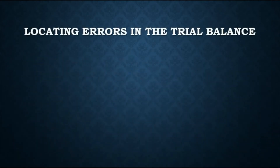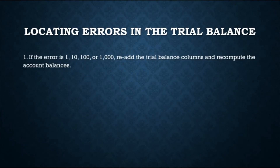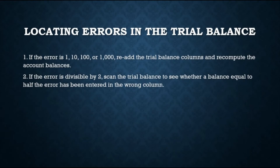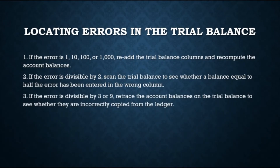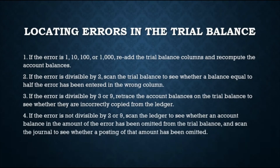If the trial balance does not balance, first determine the amount of the difference between the two columns. If the difference is 1, 10, 100, or 1,000, re-add the trial balance columns and recompute the balances. If divisible by 2, check whether a balance equal to half the error was placed in the wrong column. If divisible by 9, check the account balances — a transposition error may have occurred, for example if 12 was written as 21, the difference is 9. If divisible by 2 or 9, check the ledger for omissions in the trial balance or review the journal for unposted entries.